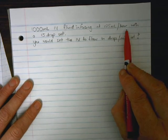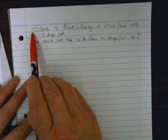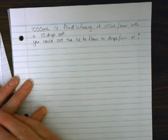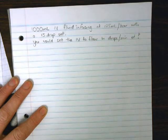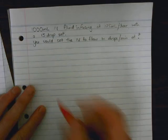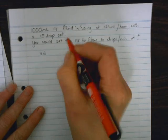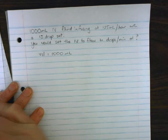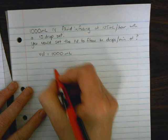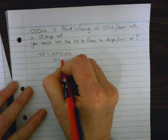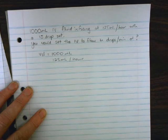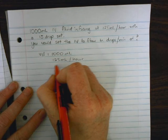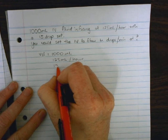So from this flow rate, we have to try to calculate the amount of time it will take for the 1000 mL to infuse with a 15 drop set. Let's write down what information we've got. We know the volume to infuse is 1000 mL, and we know the flow rate is 125 mL per hour.